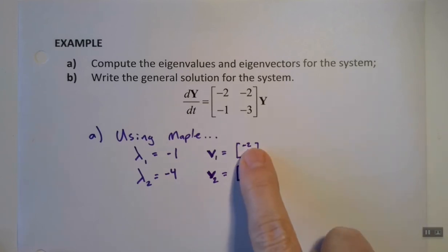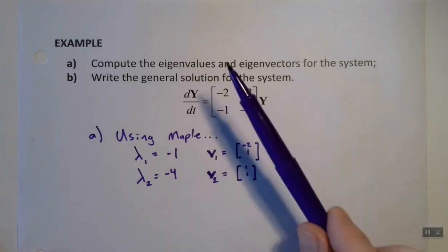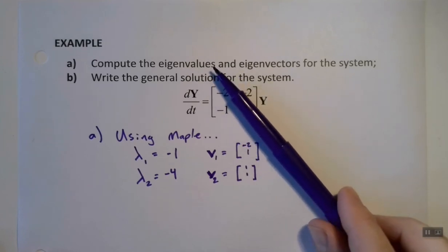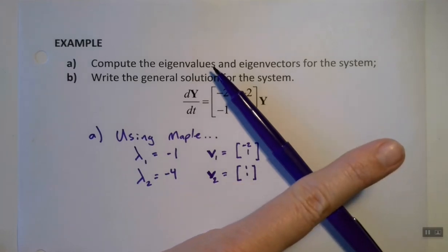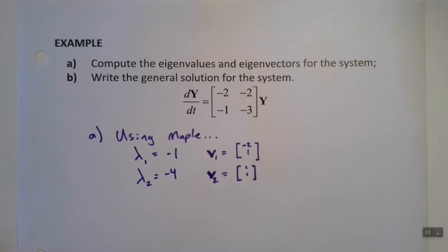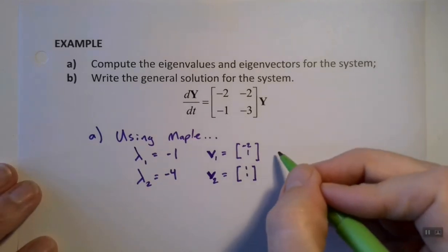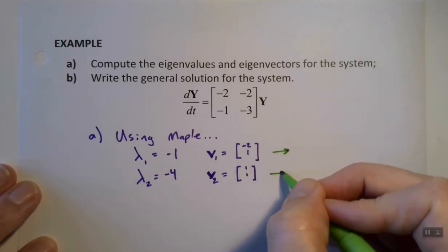And so this one means we're going negative 2, so 2 to the left and up 1. So you can imagine we've got that top one going in that direction, and then this guy is going 1, 1, so it's up 1 over 1. So it's going to be something like that. So we're going to have two straight-line solutions, and we should be able to tell what those straight-line solutions look like by converting these into their respective straight-line solutions.